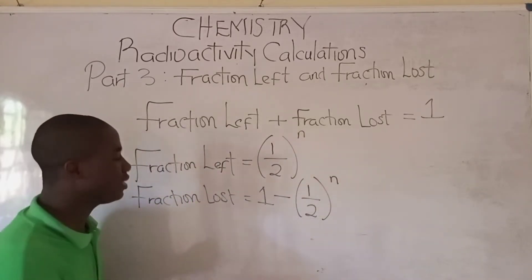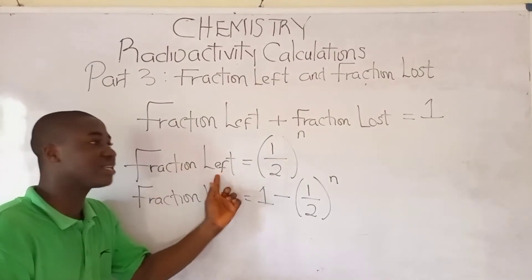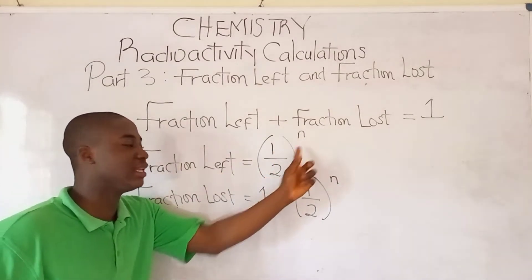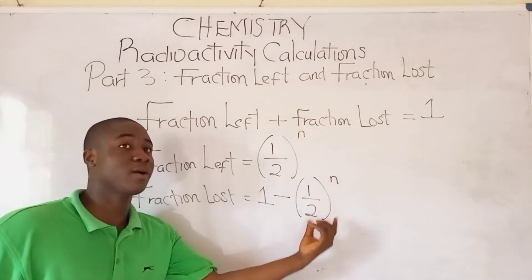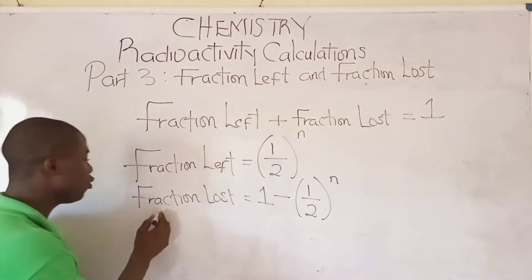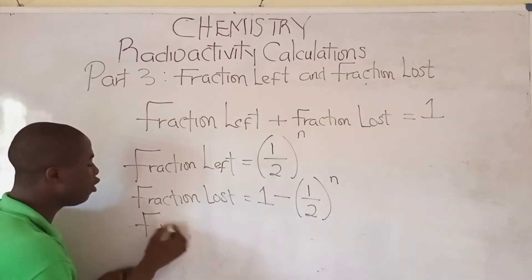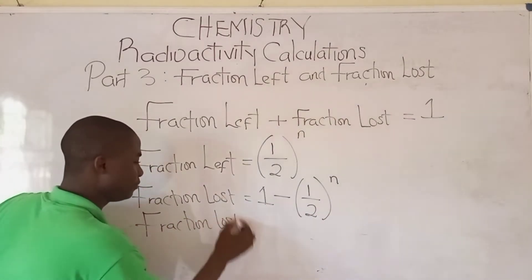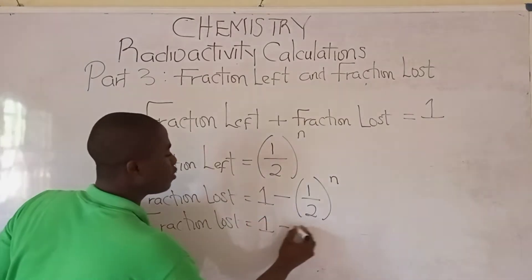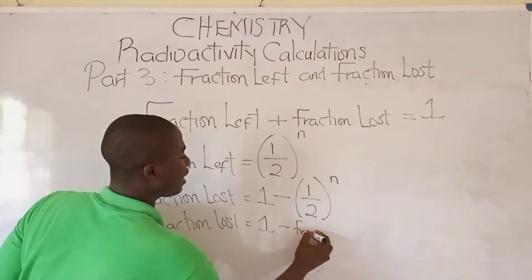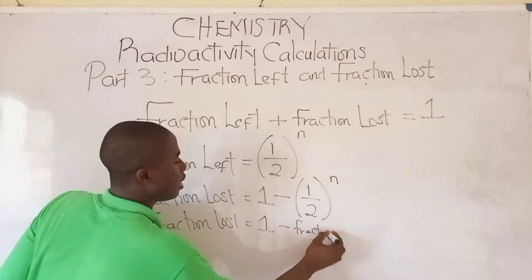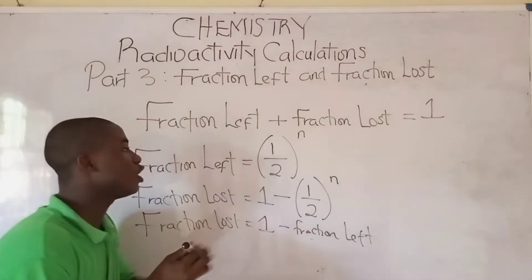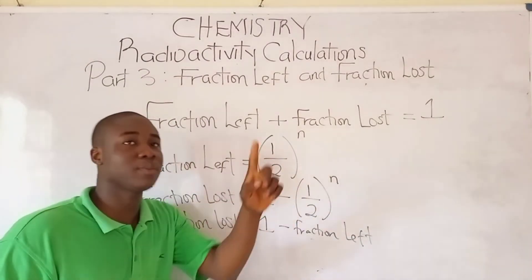You can see here for fraction left it is 1 over 2 raised to the power of n. Fraction lost can also be written as 1 minus fraction left, because fraction left is 1 over 2 raised to the power of n.